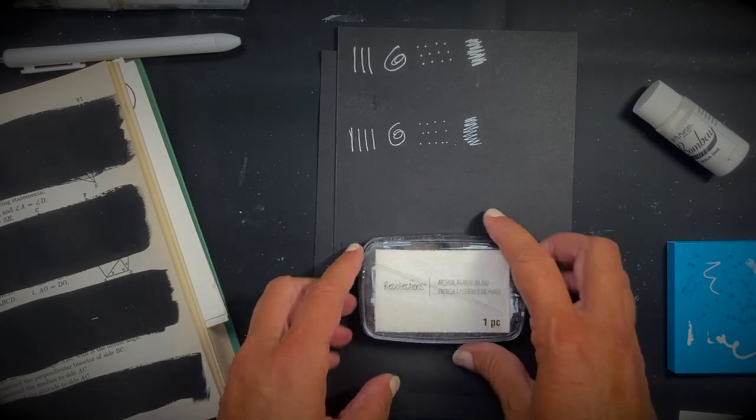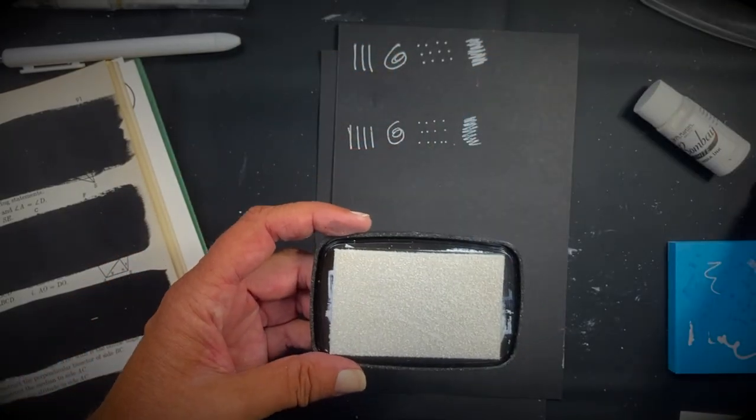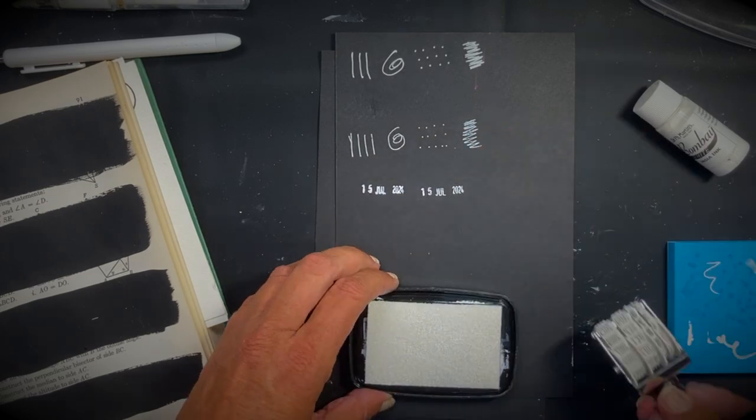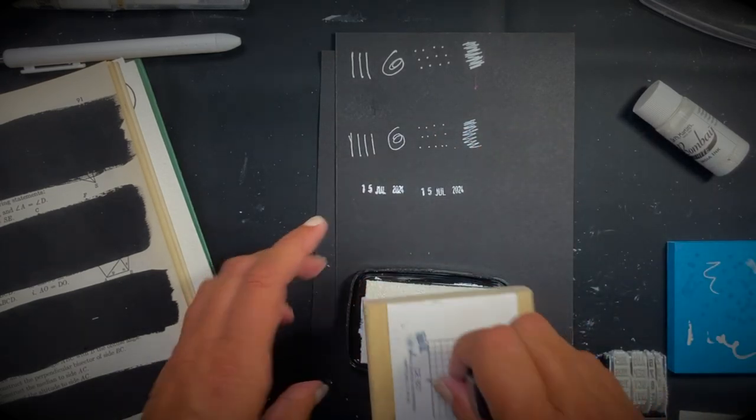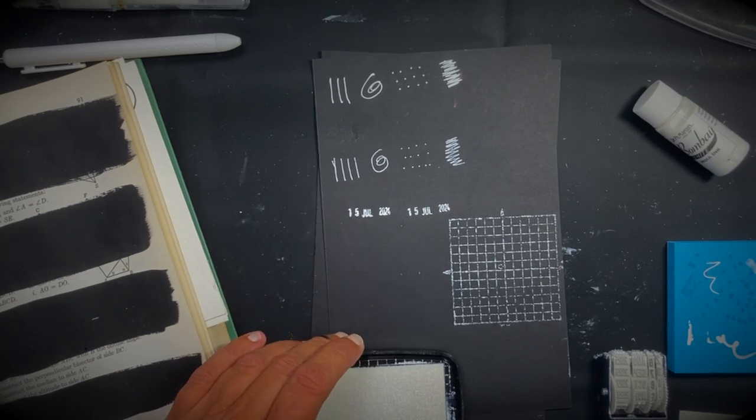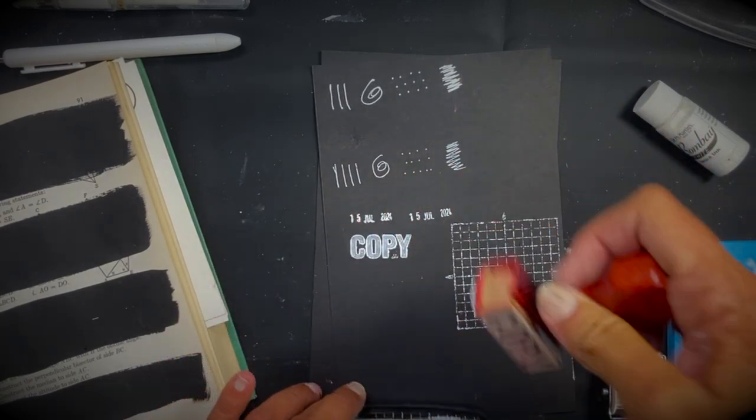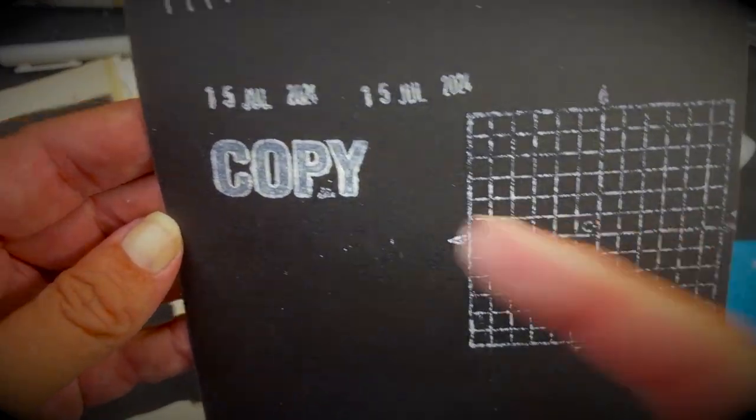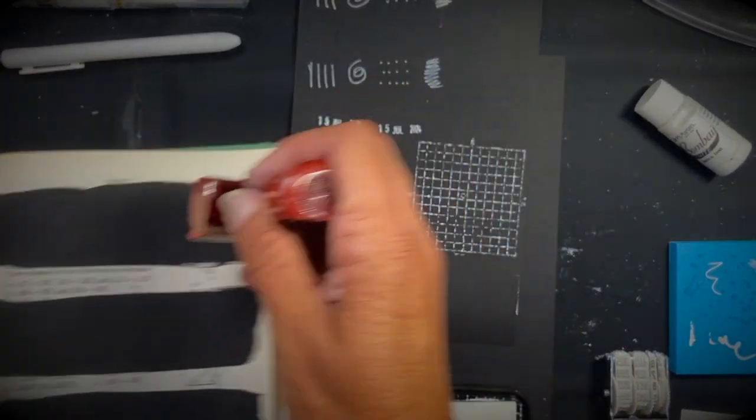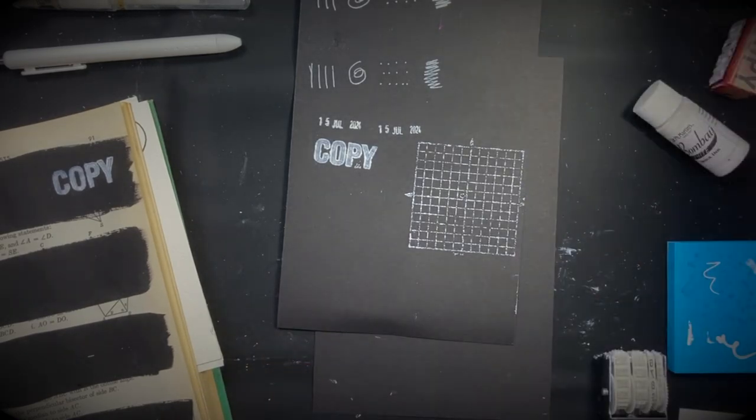And then we've got white ink. I'm going to do some stamping with it. So that's kind of cool. Let's do this one because it's got a little bit thicker stamp. So do you see there's a little bit of bleed around the edges of these, but for a white on black kind of thing. I'll put that in the swatch book as well.